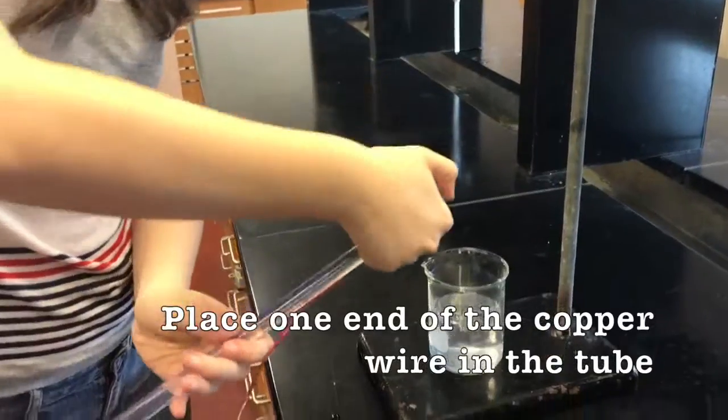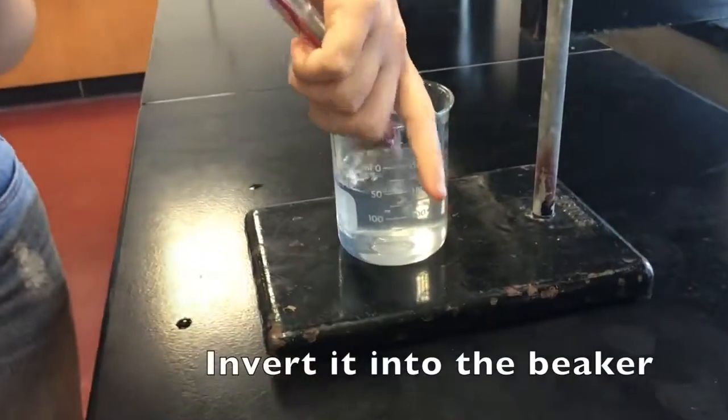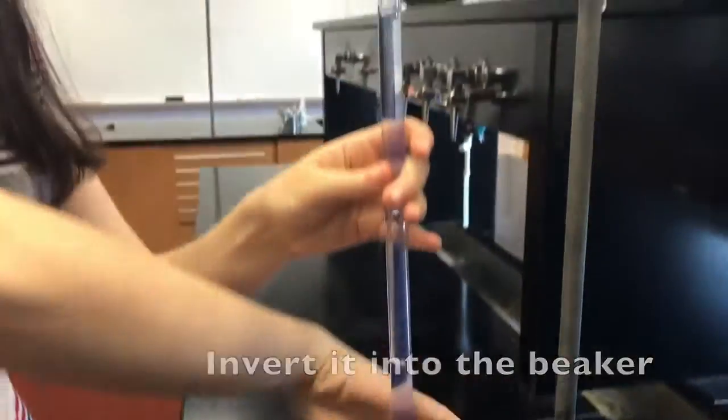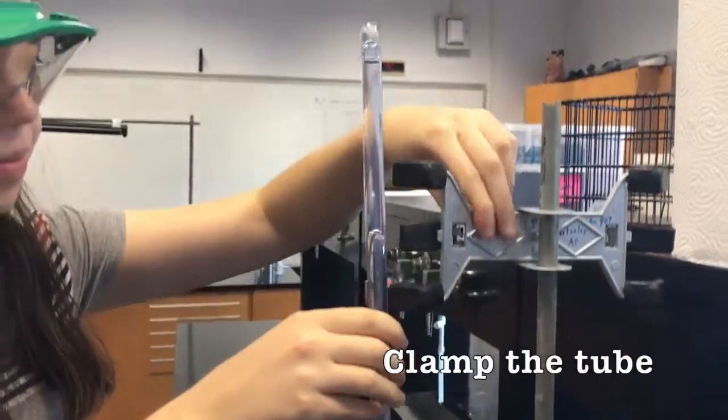Place one end of the piece of stripped copper wire in the mouth of the tube, invert it into the beaker. Clamp the tube. The other end of the wire should be above the liquid level of the salt solution.